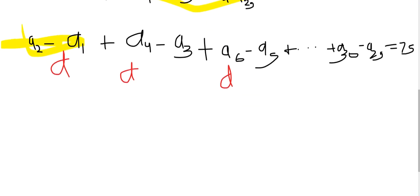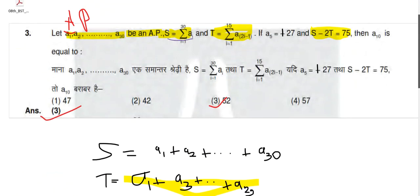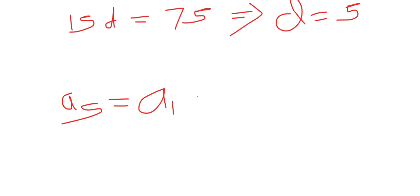So the overall equation can be written as 15d = 75, giving d = 5. After having d = 5, in the question you can see a5 is 27. If a5 is 27, then we know a5 can be written as a1 plus 4 times the common difference. So a5 = a1 + 4d. From this we can fetch a1. And a5 is 27, so 27 = a1 + 20, giving a1 = 7.